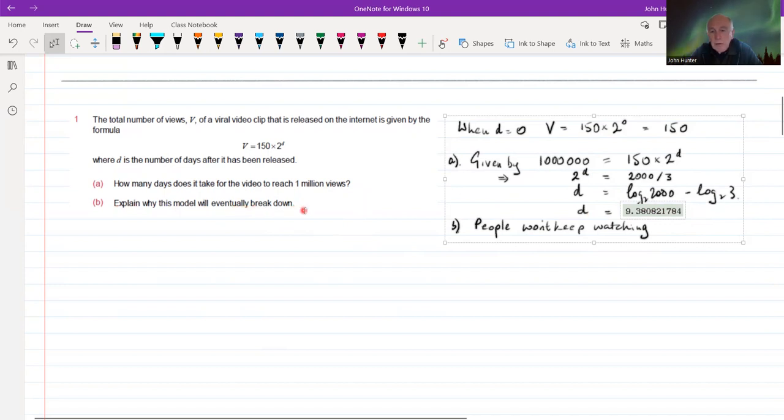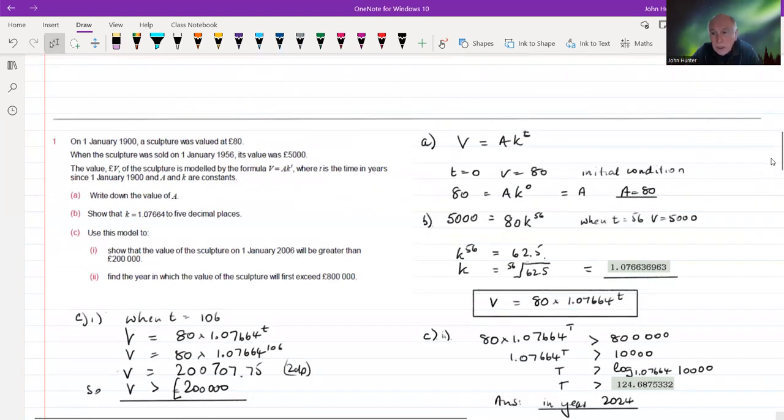Explain why this model will eventually break down. Well, it's a model, of course. One thing about models is that they do tend to work quite well within a particular range of values. And then outside that range, they become less and less useful and more and more inaccurate. Why would it break down? Eventually, everybody's seen it. So people are not going to keep viewing it. Some people might look at it for a second or a third time, but eventually, your marketplace is going to be saturated. So it won't keep growing. But over a certain period of time, it may well be a good model. That's a relatively straightforward one. Let's have a look at this one. There's a little bit more to it.